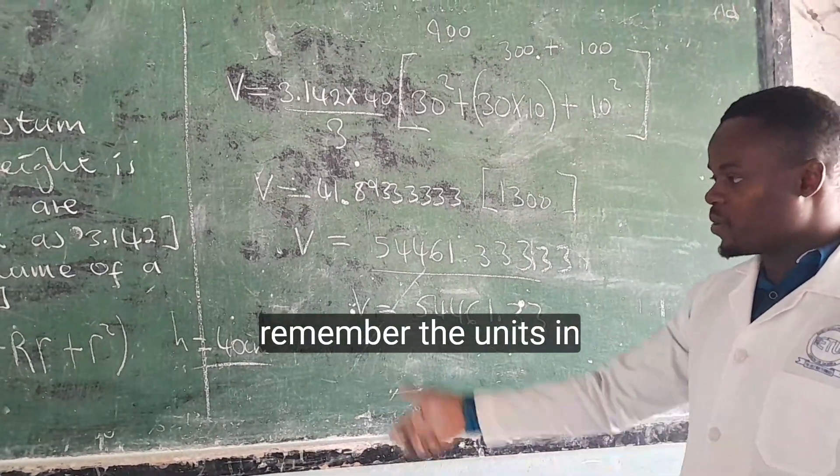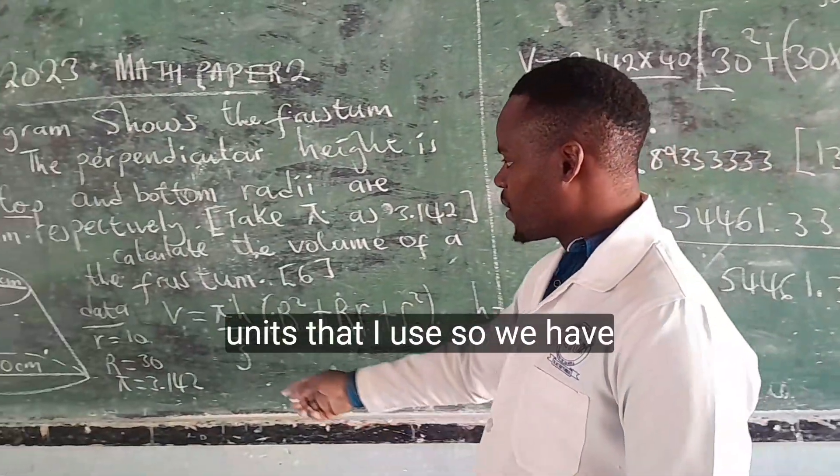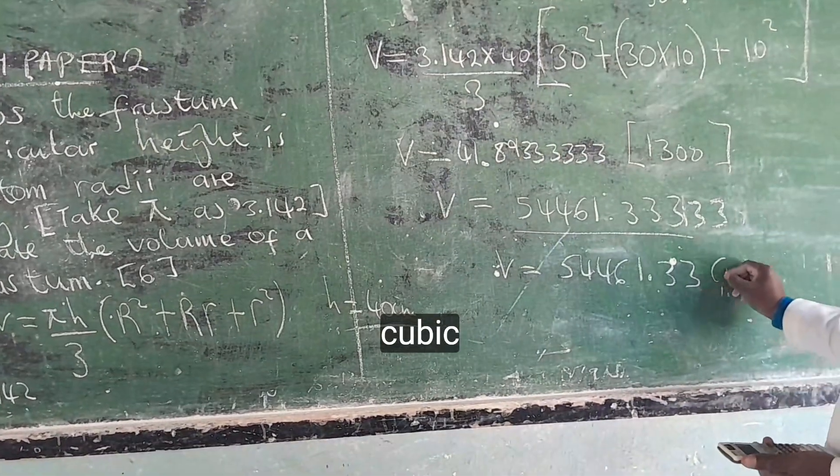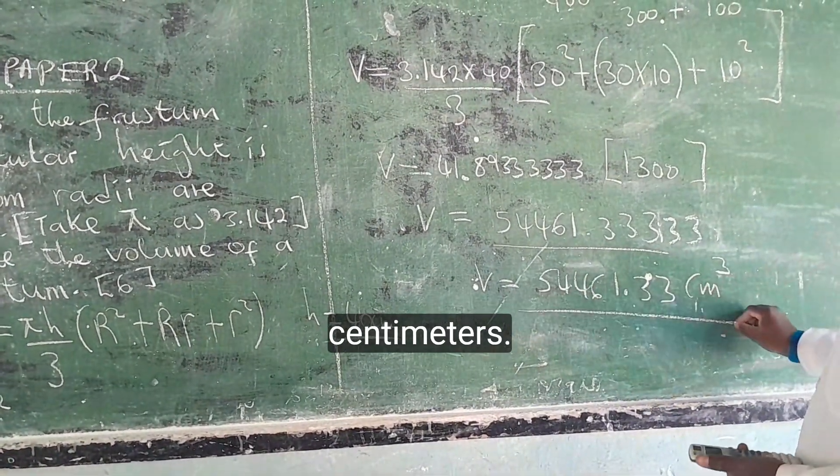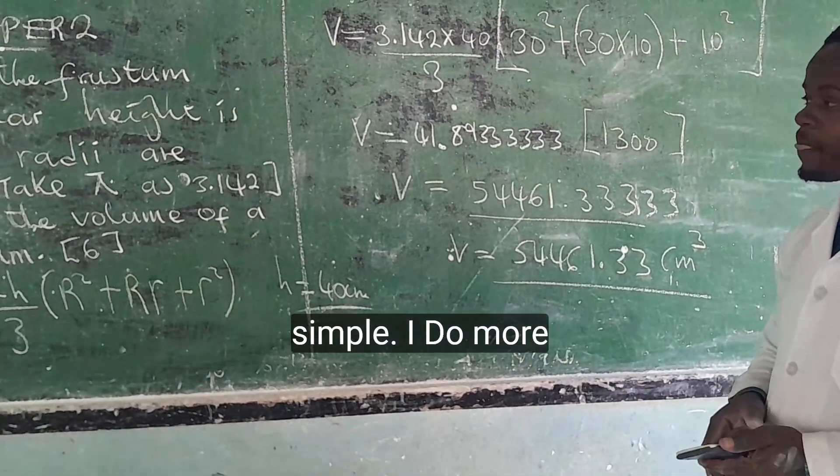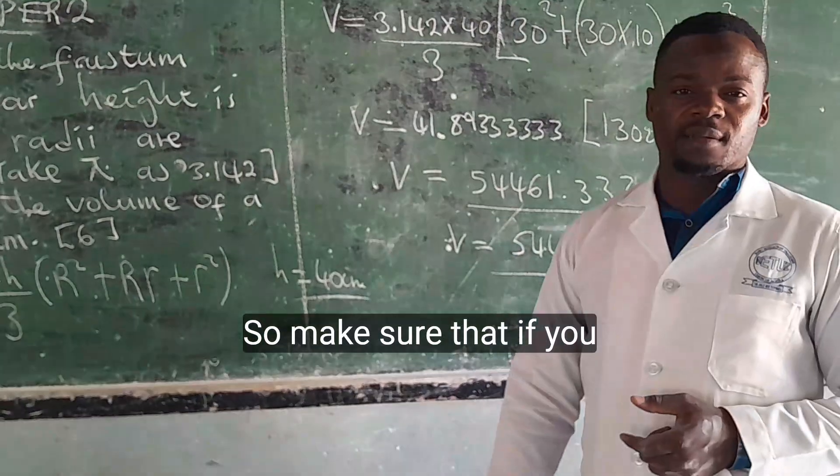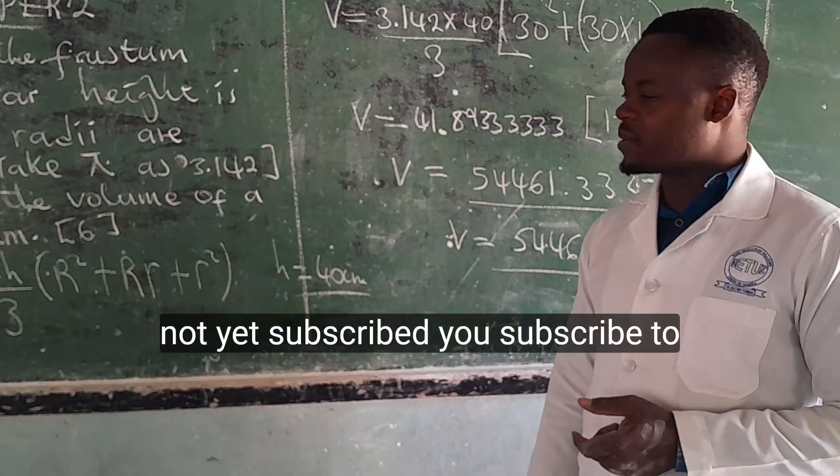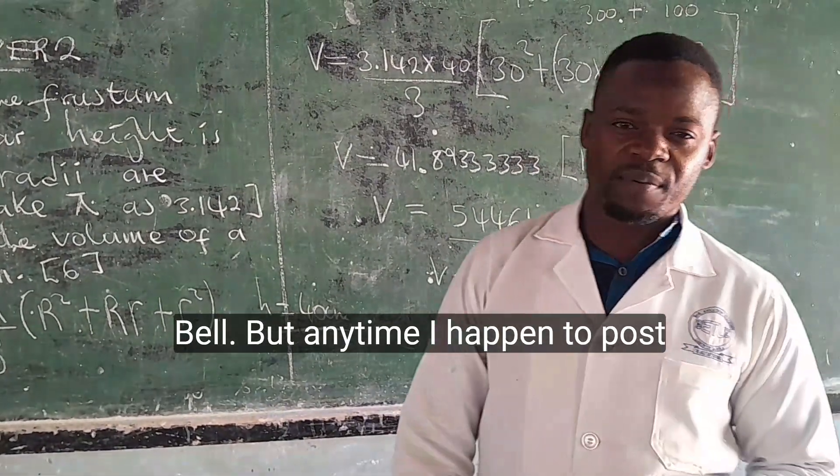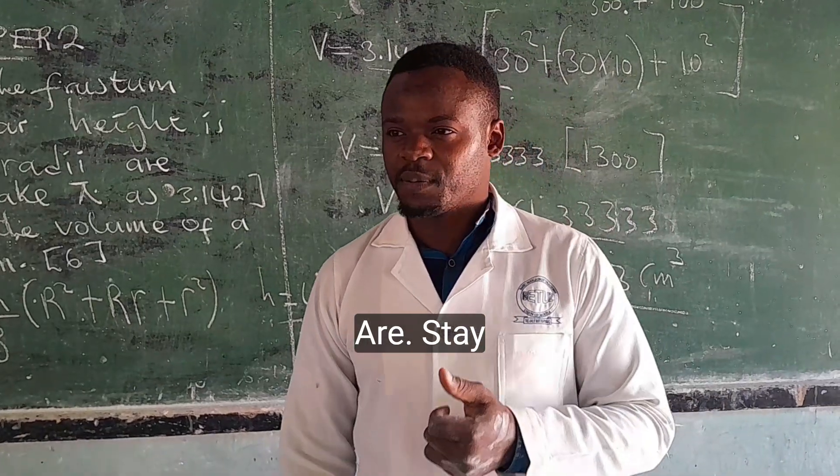Now you need to remember the units in which the volume is measured. So you take one of the units that you saw, we have centimeters, so that would be cubic centimeters. That's how we go about this one, pretty simple. I'll do more videos to prepare you for exam, so make sure that if you're not yet subscribed, subscribe to the channel and then you turn on the notification button, so anytime I happen to post the video you are a learner, it's the best.